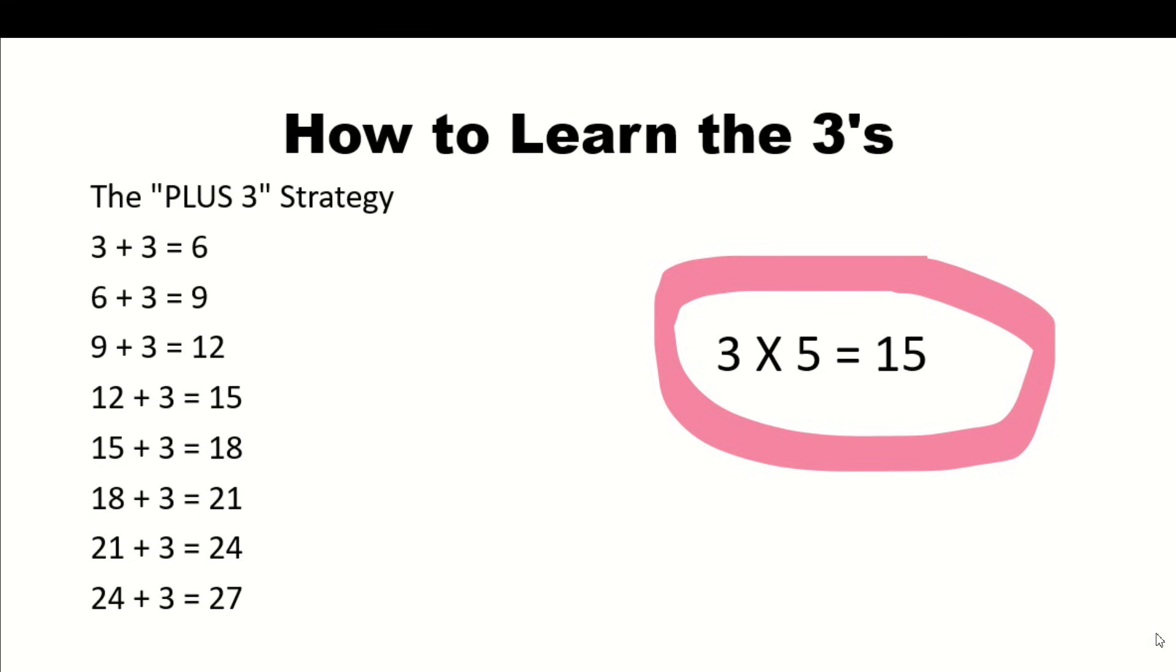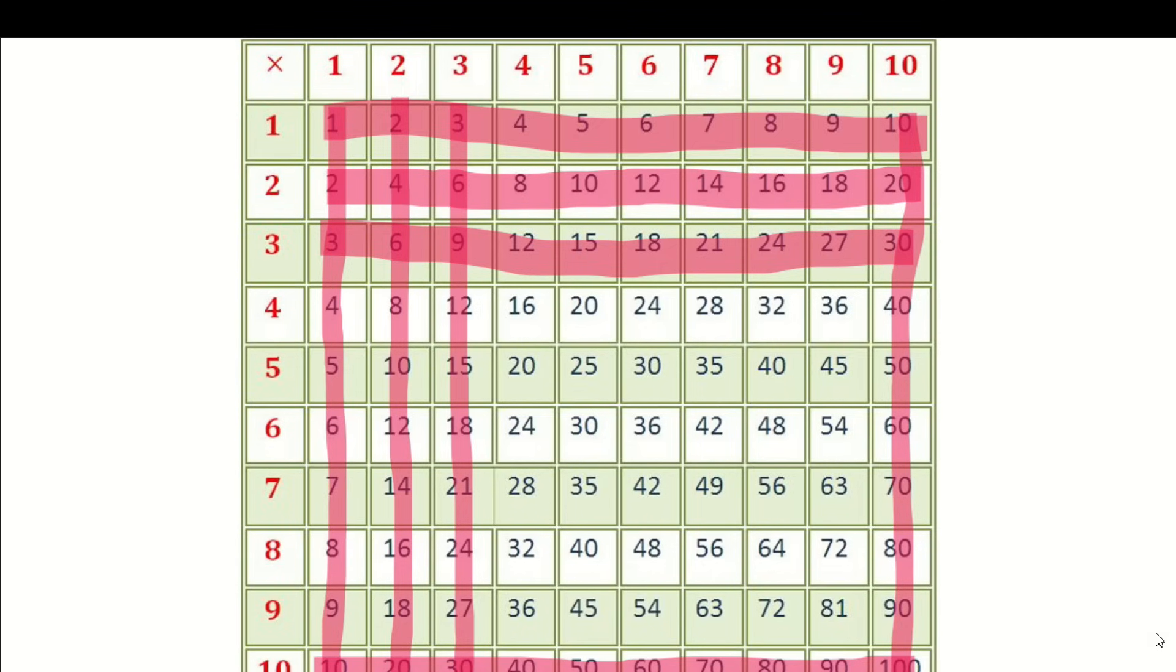Once they understand that, then do the counting real fast again. Three, six, nine, twelve, fifteen, eighteen, twenty-one, twenty-four, twenty-seven, thirty. Have them do the counting fast and then they've mastered the threes. Now you can cross out all the threes. Now you're down to a six by six square here.